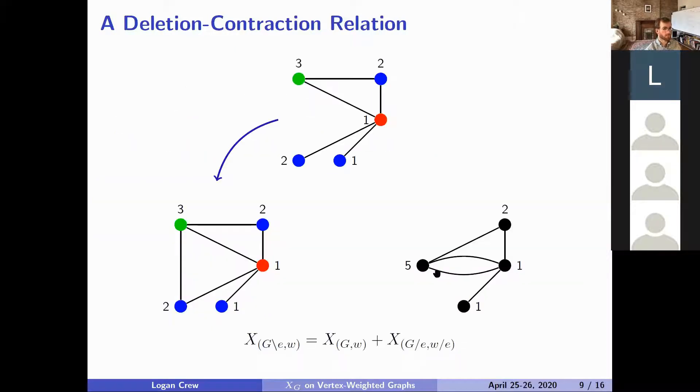So to briefly illustrate how this works, I'm going to do it from the other way around and start with X_G delete E and illustrate that if we have a coloring here with these vertex weights, so here the colors don't correspond to these numbers. These numbers are vertex weights.